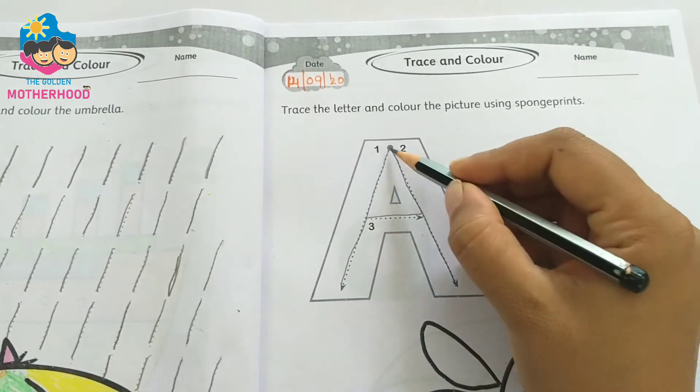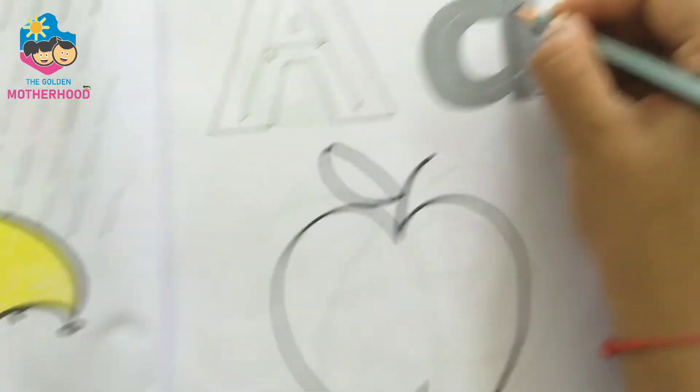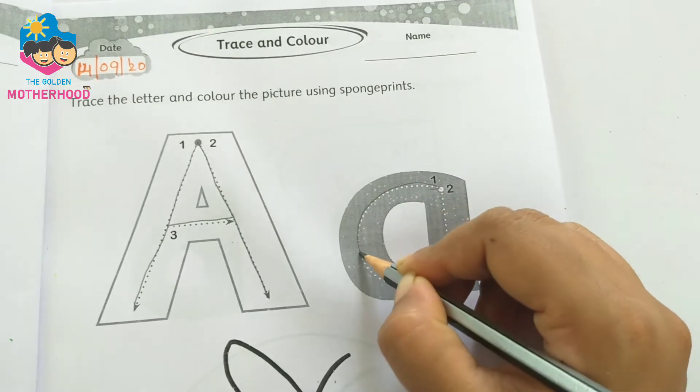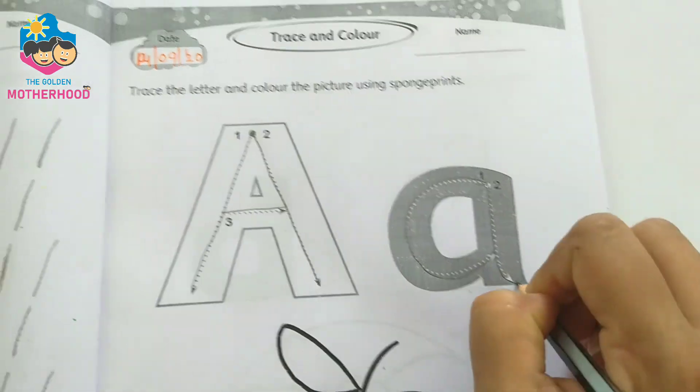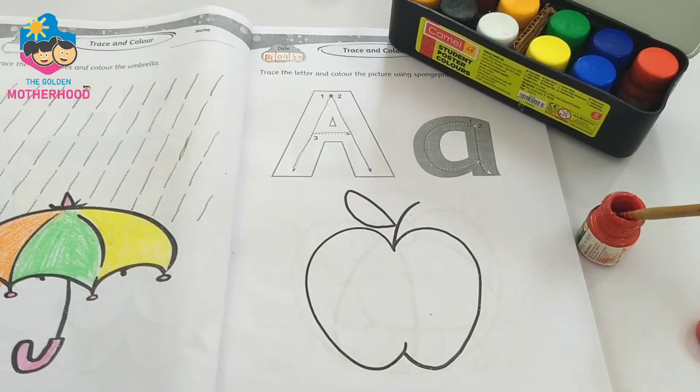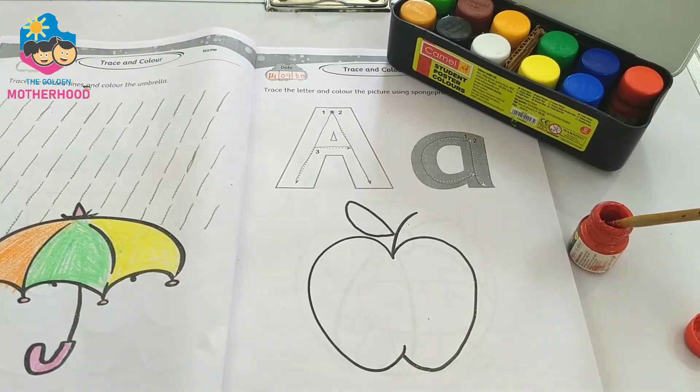One slant line, another slant line and one sleeping line. One forward curve and one standing line. Use watercolor or poster color for a sponge print.